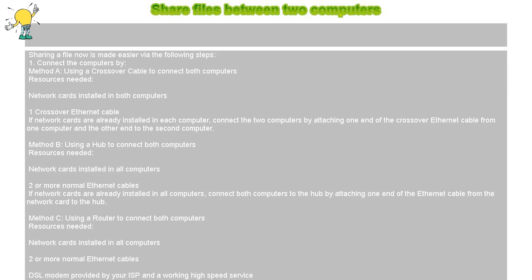Navigate to your computer's My Computer and on the address bar — either by clicking the address bar or by pressing F4 on your keyboard — type backslash backslash and the name of your other computer. For example, if the other computer is named 'laptop,' then type \laptop on the address bar.